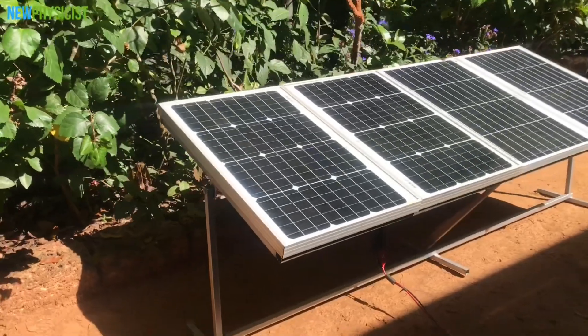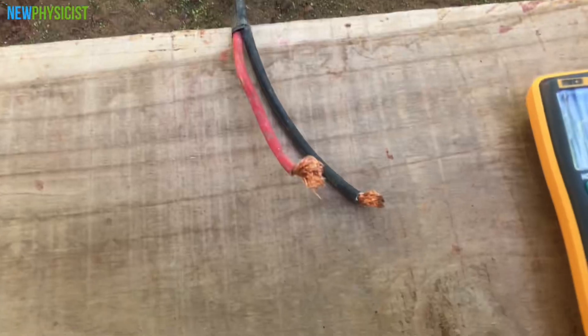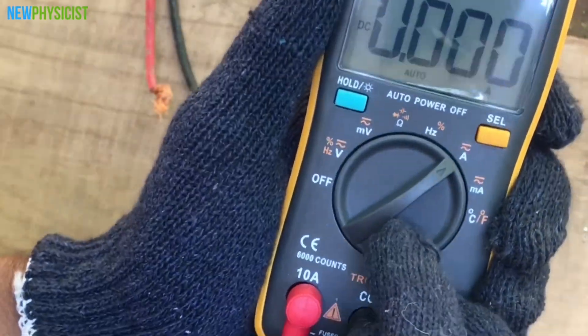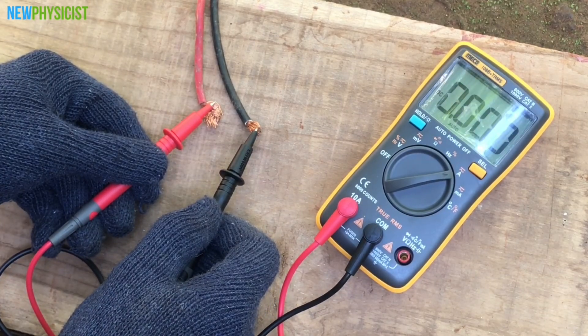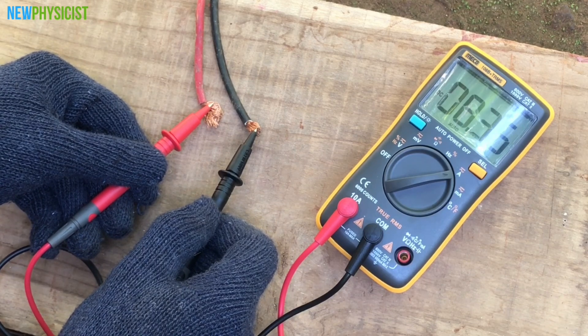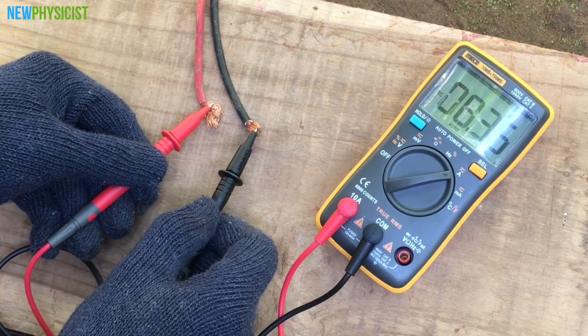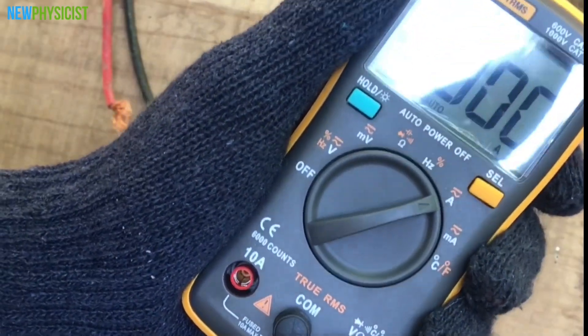Let's check the VOC and ISC of the solar array we just connected together. Adjust the multimeter to the 10 ampere range and then connect the testing leads to the solar panel output. When we are connecting our meter to a solar panel we are actually short circuiting the panel. This means the maximum current will flow through the circuit. Here we get an ISC of 8 amps.